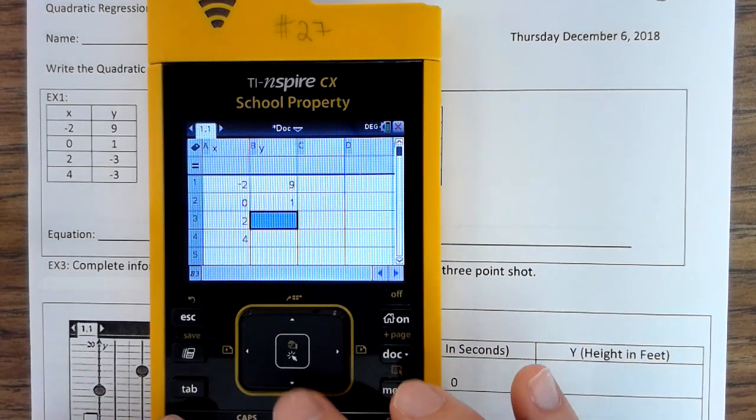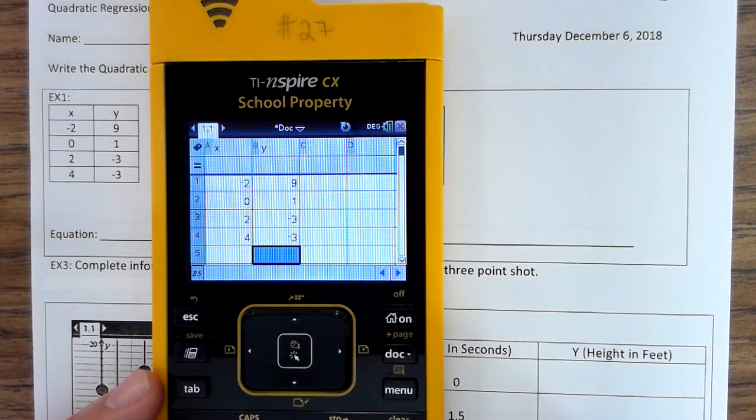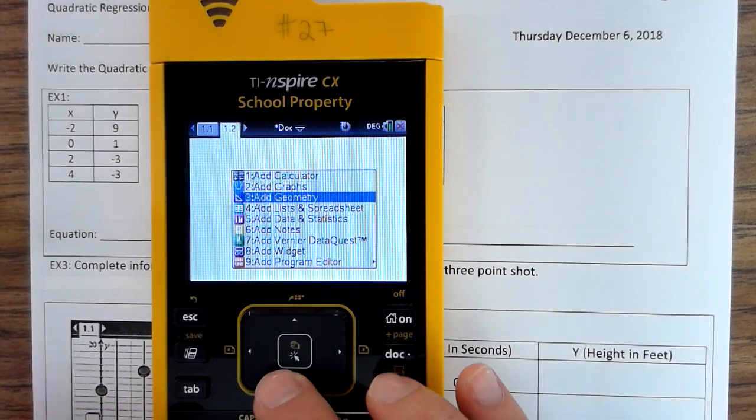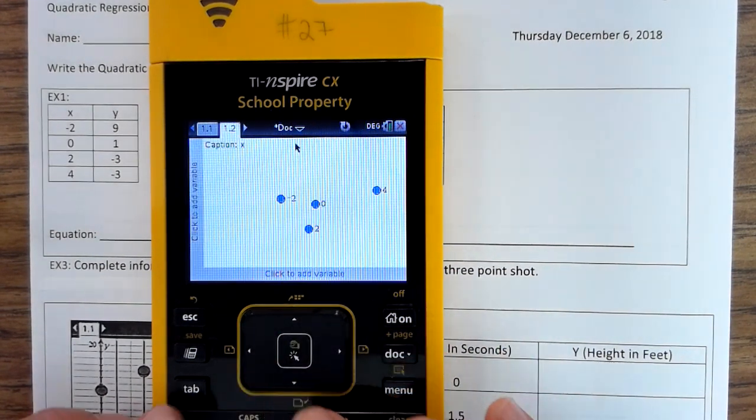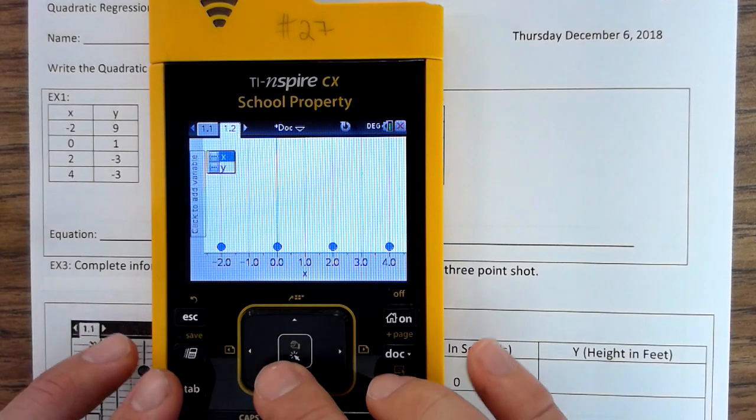1, negative 3, negative 3. And you're going to press Control, Doc, number 5, tab X, tab Y.